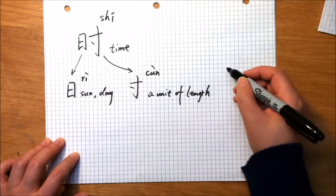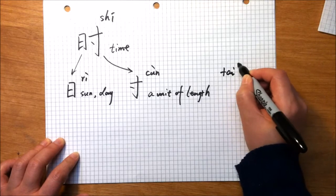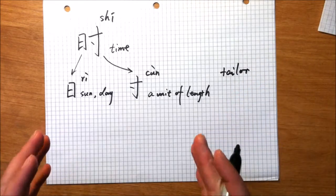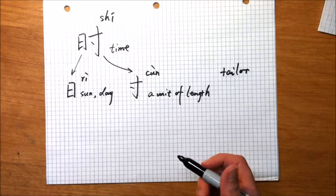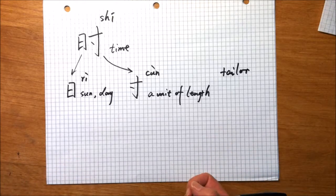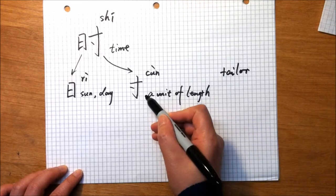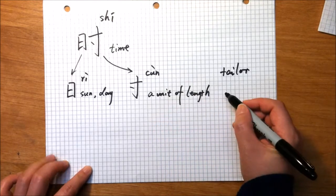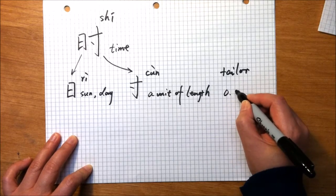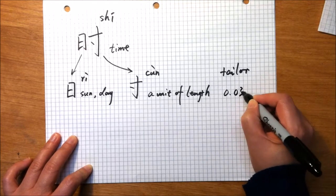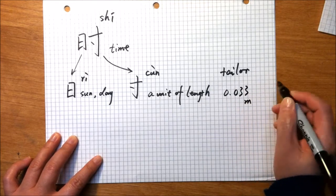Before the Chinese tailor, when they make a dress for the customer, they need to do some measure, and the unit they are still using is cùn. One cùn equals to about 0.033 meters.